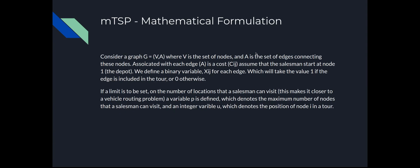Next we have a mathematical formulation of the Multiple Travelling Salesman Problem. We have a graph with a set of nodes V and edges A. Associated with each edge is a cost Cij. We define the binary variable Xij, which denotes whether an edge is visited or not. If a limit is set to make it a vehicle routing problem, a variable P is defined denoting the maximum number of nodes a salesman can visit, and an integer variable U denotes the position of a node, ensuring the salesman doesn't get so far from the start that they can't return.